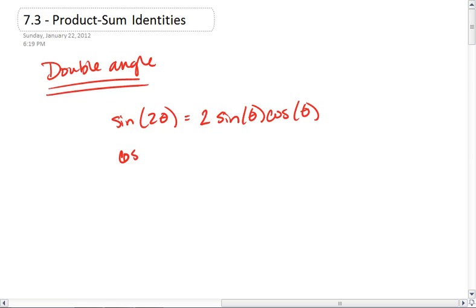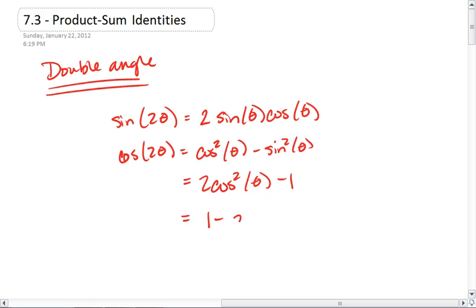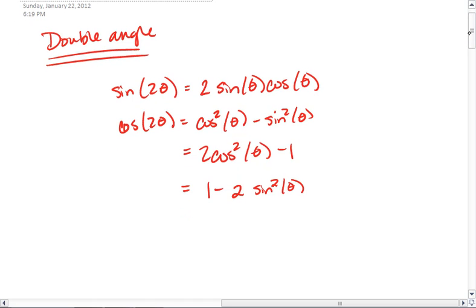For cosine, we get cosine of 2 theta equals cosine squared theta minus sine squared theta, which also equals 2 cosine squared theta minus 1, which also equals 1 minus 2 sine squared theta. Any of those options will work for cosine of 2 theta.